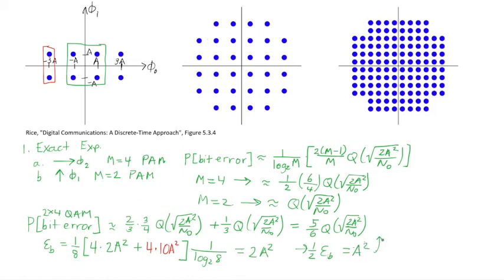Using this result, we can write the probability of bit error with the same constant out front, but inside the Q function, instead of A², we plug in the relationship Eᵦ = 2A², giving the probability of bit error as (5/6) Q(√(Eᵦ/N₀)).